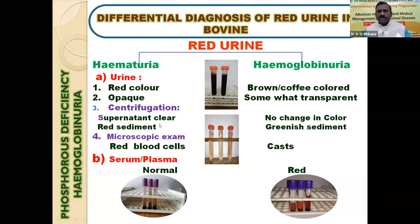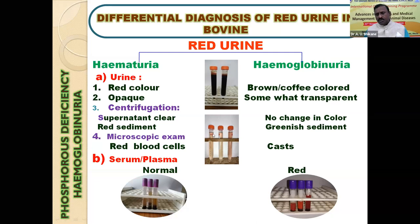Wherever a centrifuge machine or laboratory is available, we can go for centrifugation. But what to do under field conditions where a centrifuge machine is not available? Keep the urine undisturbed — maybe in a test tube stand — for half an hour to one hour. After half an hour, if it is hematuria, the RBCs will start settling at the bottom. The top will be very light in color, the middle portion somewhat darker, and the lower portion most dark. Whereas in hemoglobinuria, there will be no change in color. This is possible even under field conditions.